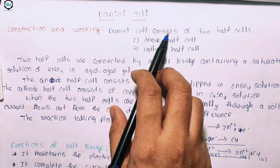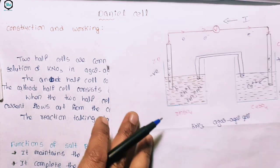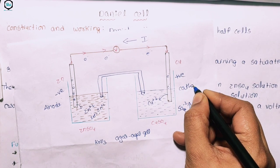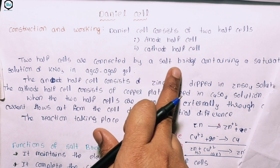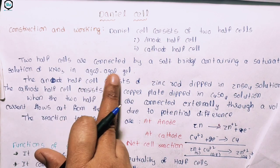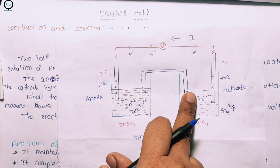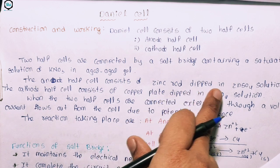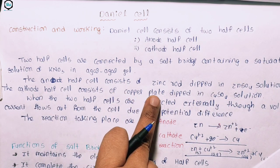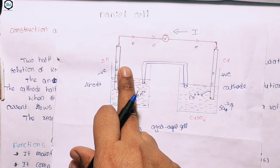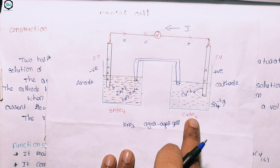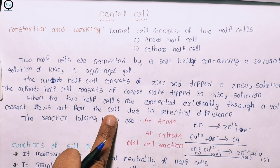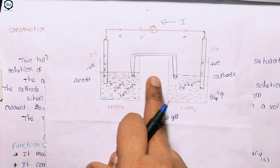The Daniel cell consists of two half cells: the anode half cell (negative) and the cathode half cell (positive). The two half cells are connected by a salt bridge containing a saturated solution of KNO₃ in agar-agar gel. The anode half cell has a zinc rod dipped in zinc sulfate solution, and the cathode half cell has a copper plate dipped in copper sulfate solution. When connected externally through a voltmeter, current flows due to the potential difference.